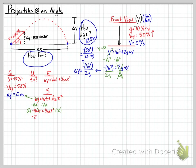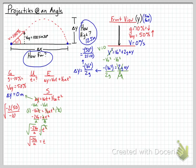After simplifying and dividing by the acceleration, we have t on one side under a square. We take the square root of both sides, giving us: t = √(−2v₀ / a). Plugging in: t = √(−2 × 50 / −10) = √10... which gives us t = 10 seconds.